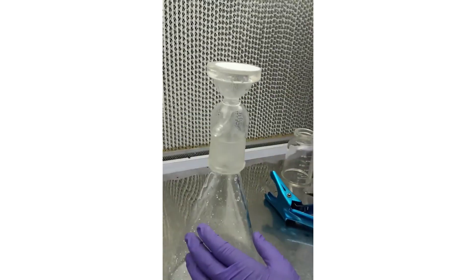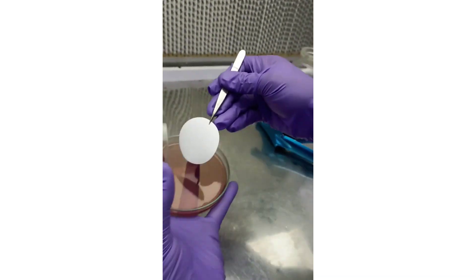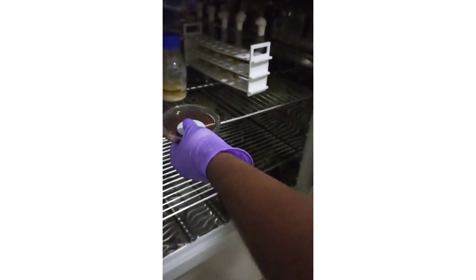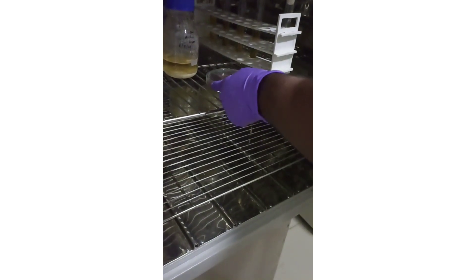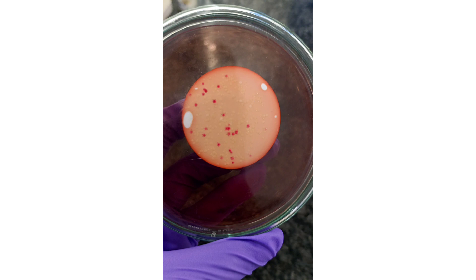With the help of forceps, remove the filter paper and place it on the VRB agar media plate evenly. Incubate at 37 degrees Celsius for 24 hours. Count the number of colonies obtained on the filter paper and report the results.